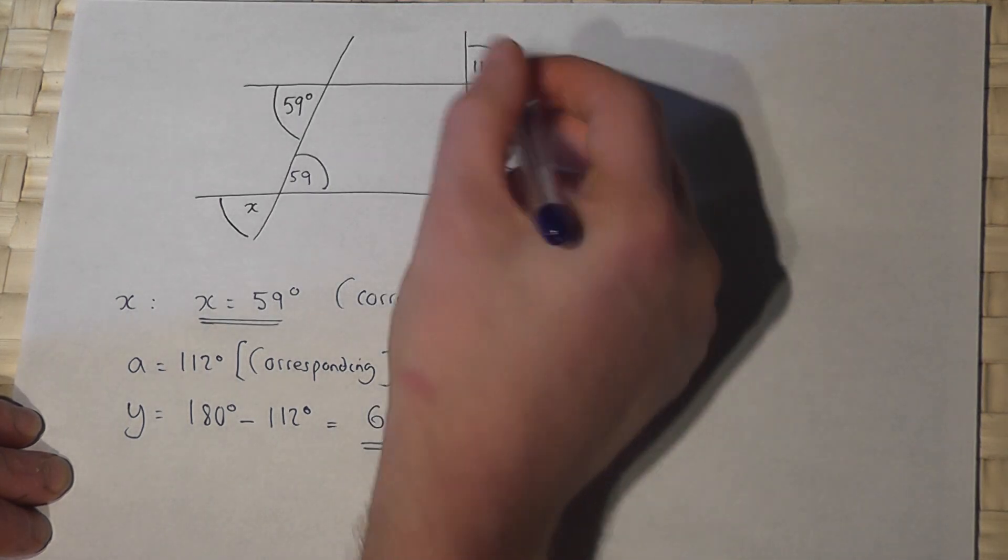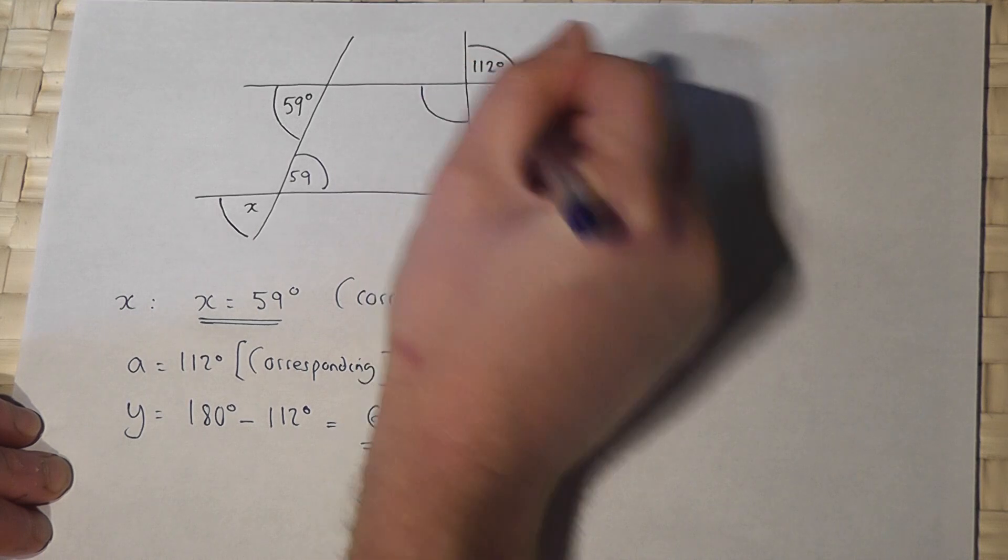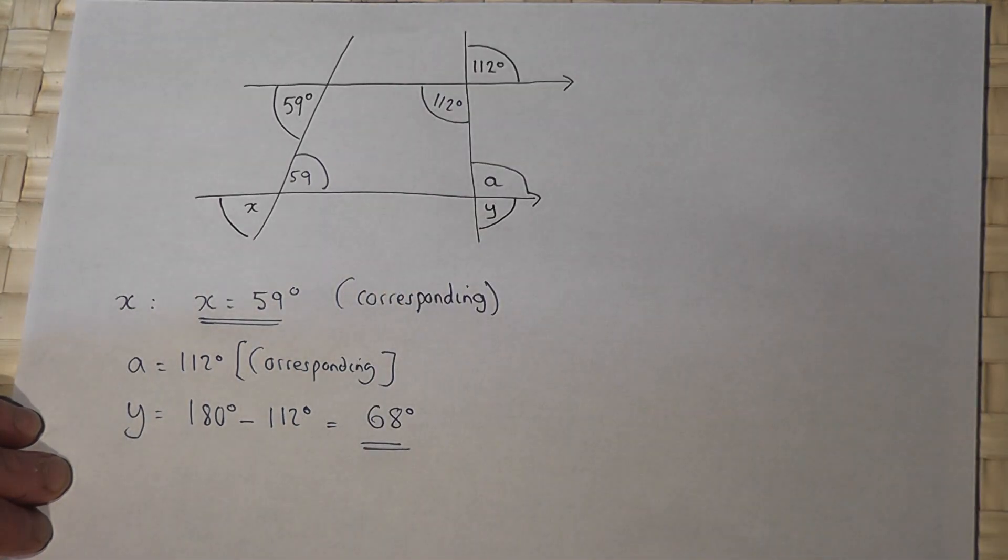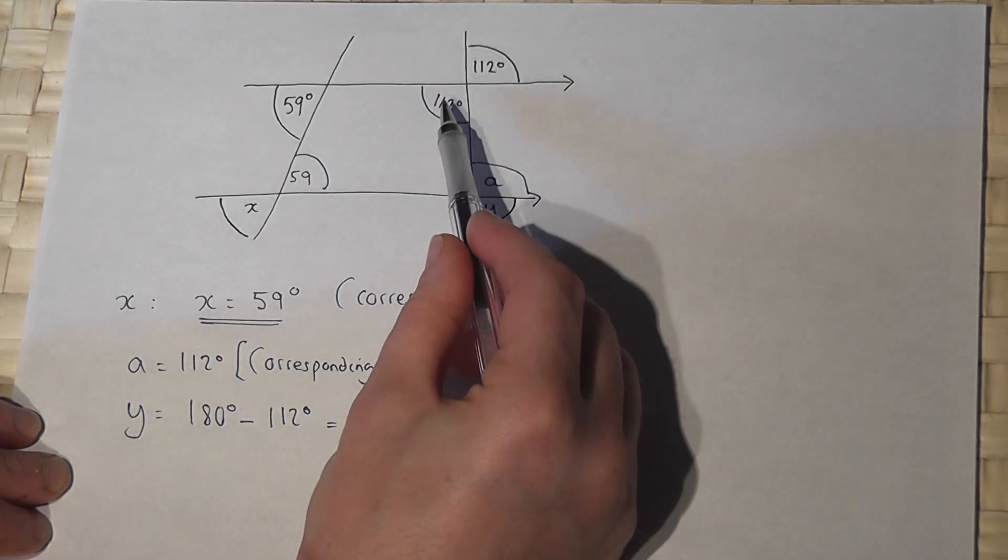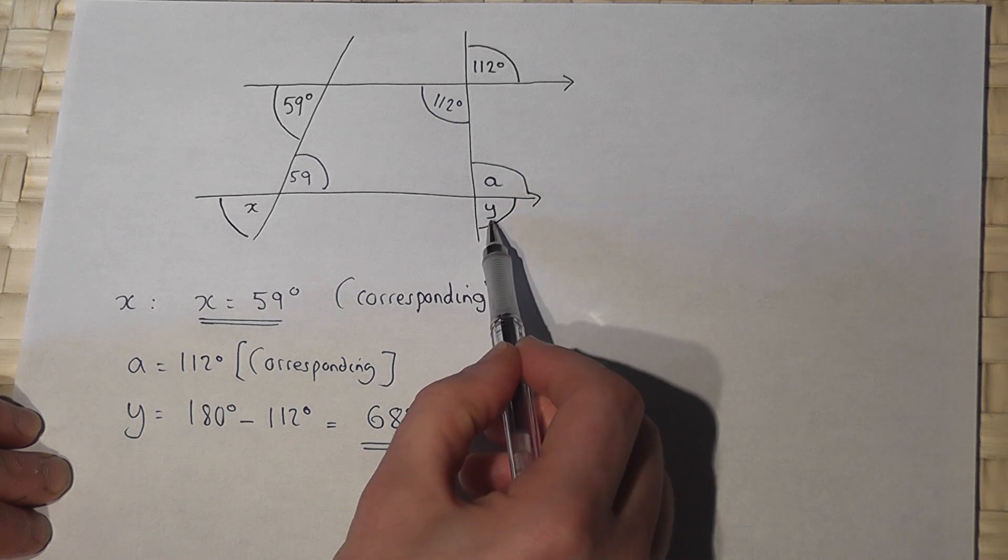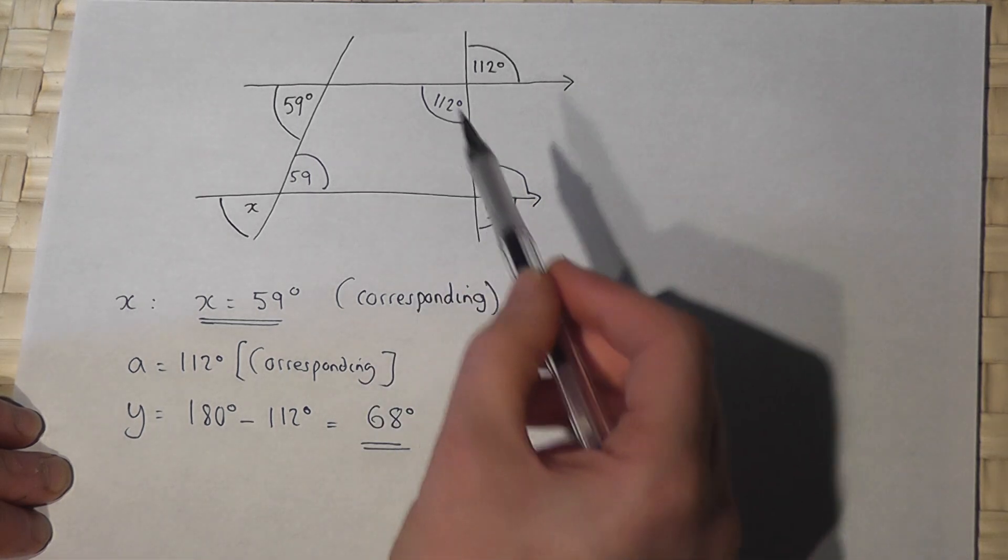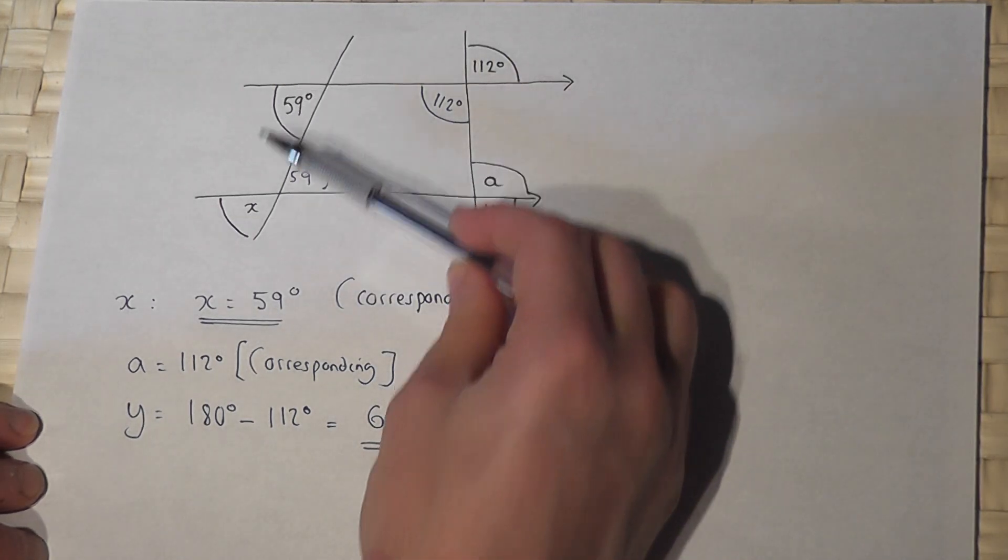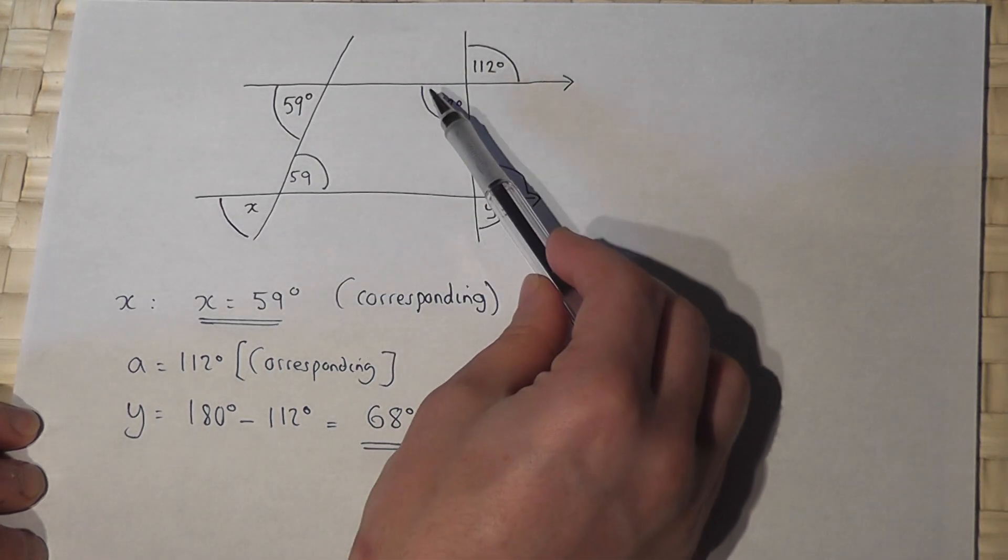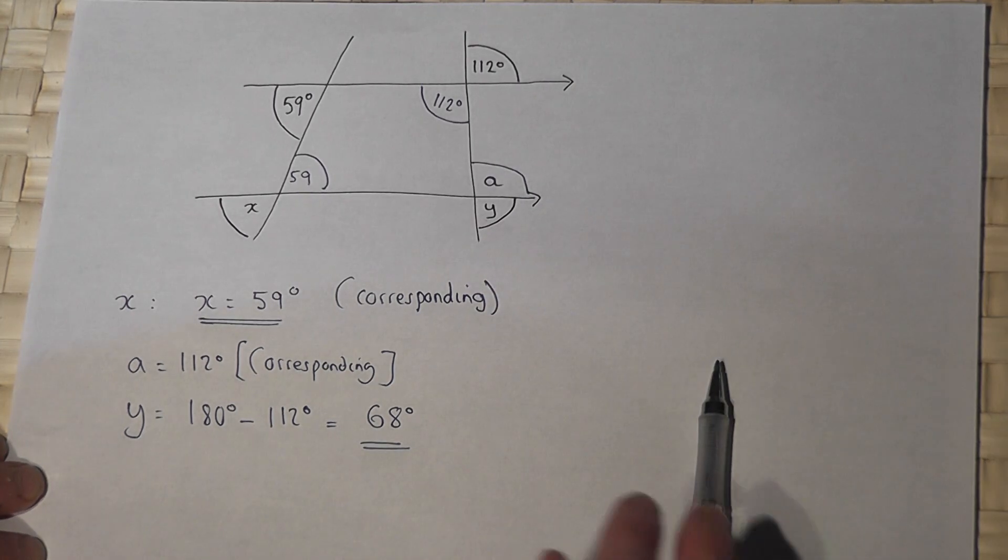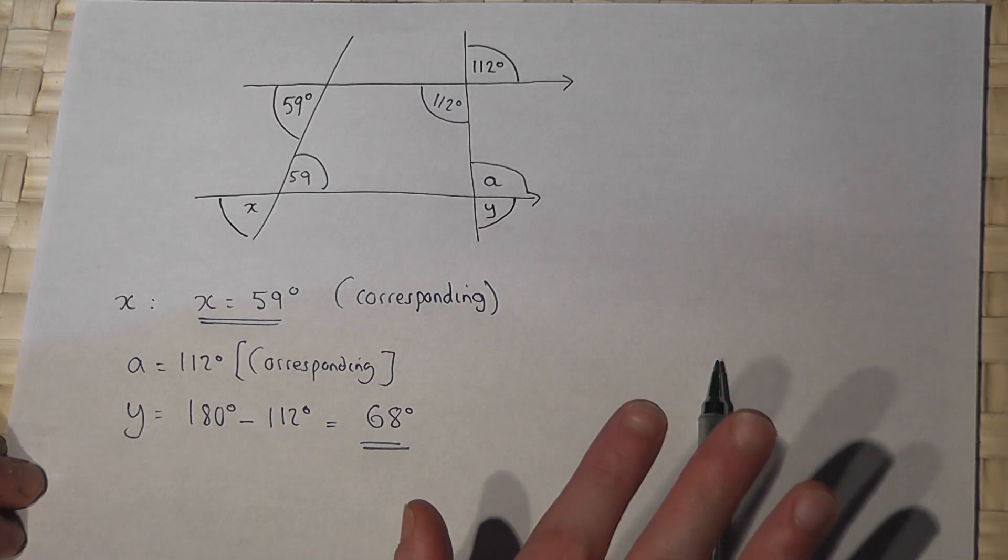Other options would be to find this angle here, that's opposite, and then say angle A is alternate to 112 and then find Y in a similar way. So there's lots of ways of doing this, but in the end, as long as you're clear which angles correspond or are alternate or on straight lines, then these sorts of problems are quite basic and quite possible to solve.